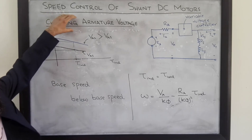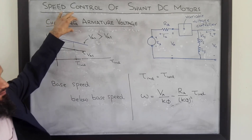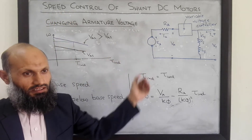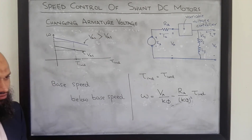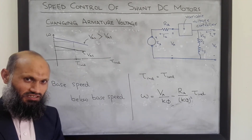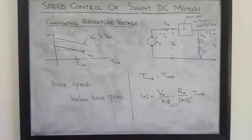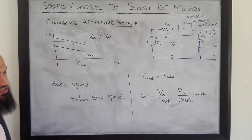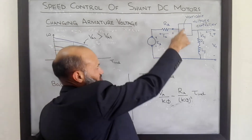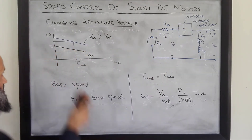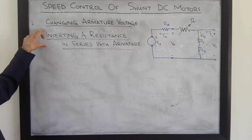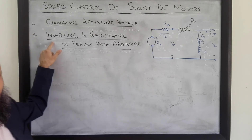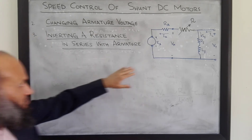Furthermore, this approach can be equally applied to separately excited DC motors as well as permanent magnet DC motors. Next, we discuss the third approach to control the speed of a shunt DC motor: inserting an additional resistor in series with the armature circuit.